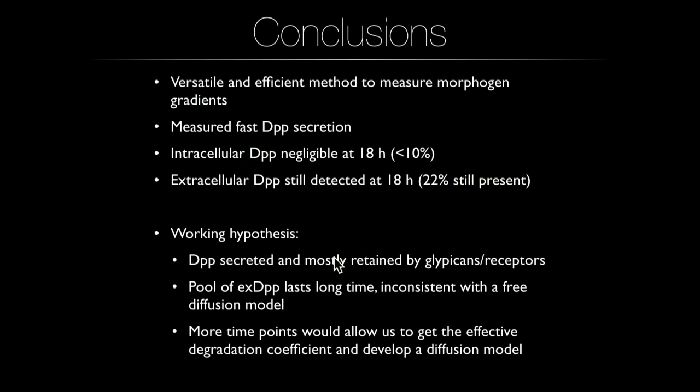In summary, we have a versatile and efficient method to measure the morphogen, analyzing both protein populations simultaneously. We have seen how fast DPP secretion is and how little time the two protein copies coexist inside the cell. The intracellular signal is negligible at 18 hours, but the extracellular persists until 21–22 hours. Our working hypothesis is that DPP is secreted and most protein is retained by glypicans — DALI and DALI-like — or by the receptor. This extracellular DPP pool lasting a long time is inconsistent with free diffusion modeling, where degradation would need to be very fast. We still need more time points to derive the effective degradation coefficient for a diffusion model.